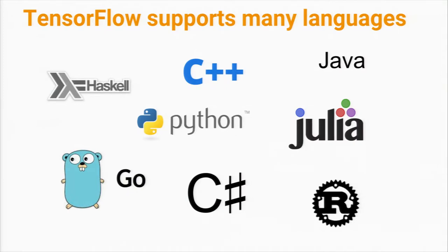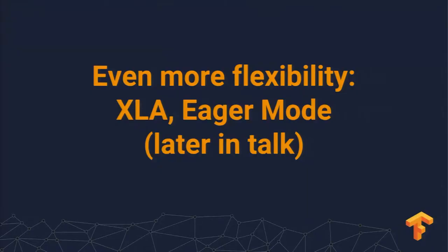TensorFlow also supports many languages. The most straightforward way to work with it is through Python, but we have great C, C++, Go, and Java bindings, and also community contributions in C#, Julia, Rust, Haskell, and R has been added recently. So there are lots of ways to talk to TensorFlow.